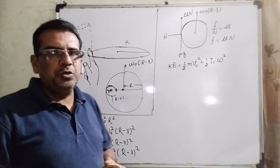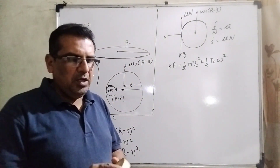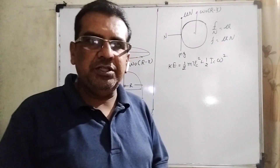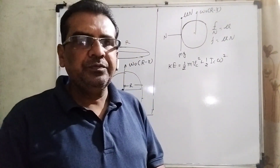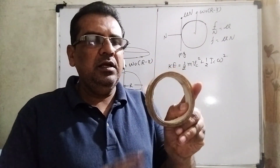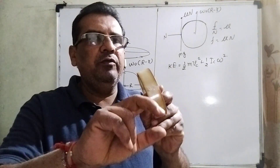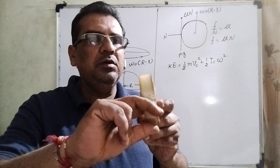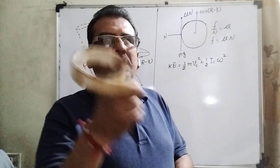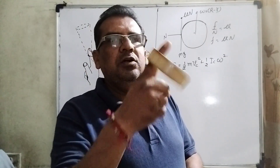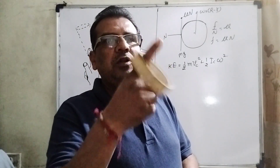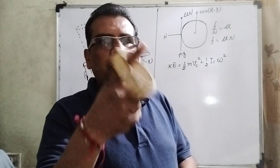Before solving this question, I am showing one activity — please watch it carefully. You can see that it is a ring, and I am going to revolve this ring with the help of my finger, like this, without losing contact. This will be moving.